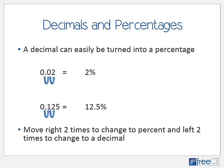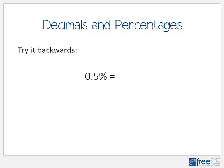If you have trouble remembering how many places to move, remember that a percentage is a number out of 100, and 100 has two zeros — so move two places to the right to make a percent. In our second example, 0.125 moved two places to the right gives 12.5%. Now try it backwards: what is 0.5% as a decimal?